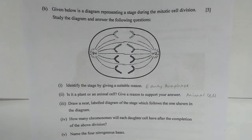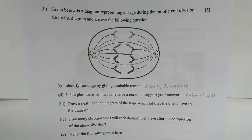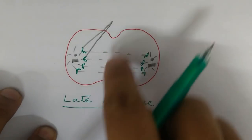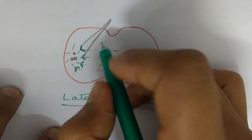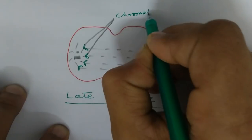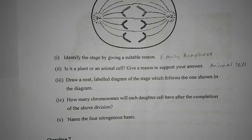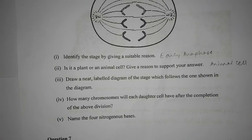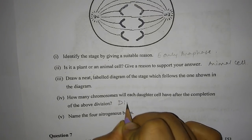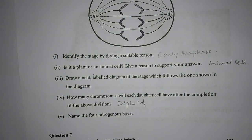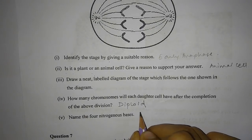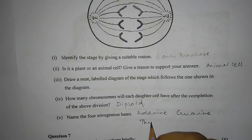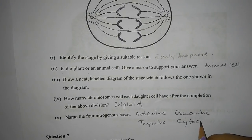Number three — draw a neat labeled diagram of the stage which follows. This is late anaphase, where the phragmoplast has started to develop and the chromatids are visible. Number four — each daughter cell will have the diploid number of chromosomes. Number five — name the four nitrogenous bases: adenine, guanine, thymine, and cytosine.